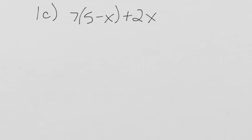Problem 1c is asking me to simplify the expression. The first step is to apply the distributive property. So I distribute 7 into the parentheses: 7 times 5 is 35, and 7 times minus x is minus 7x.